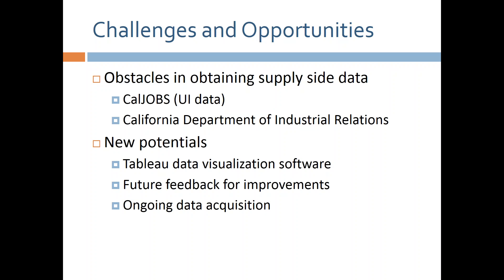There were challenges in developing the tool, mainly obtaining supply-side data. We approached CalJobs, which has information on UI claimants who went through training, and the Department of Industrial Relations for apprenticeship data. However, both sources had data quality issues, leading us to exclude them. Going forward, we are exploring Tableau data visualization software to create a webpage, and will continue to explore other data sources to increase the tool's usefulness.